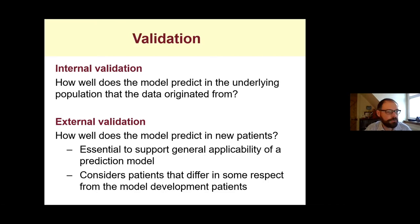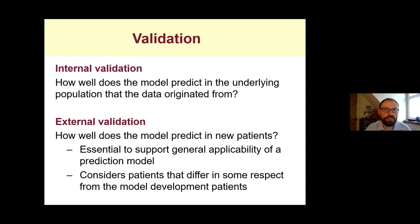External validation is commonly considered a stronger test for prediction models than internal validation because it assesses transportability — how well does your model predict in brand new patients? That's essential to support the general application of a prediction model. It considers that patients may differ in some respect from those used to develop the model. If the model predicts well in those new patients, that's excellent. If not, there are things you can do to adjust the model so that it does.